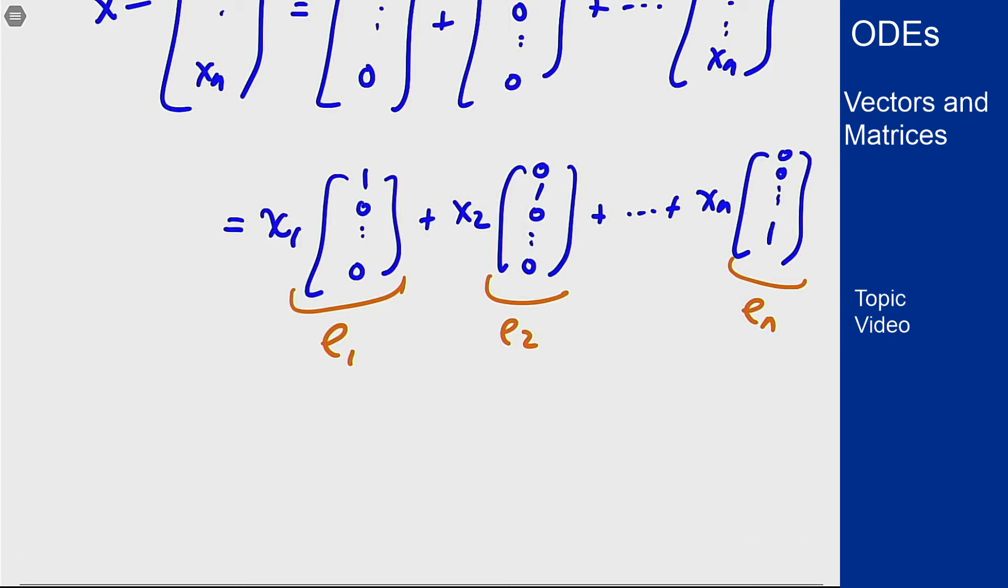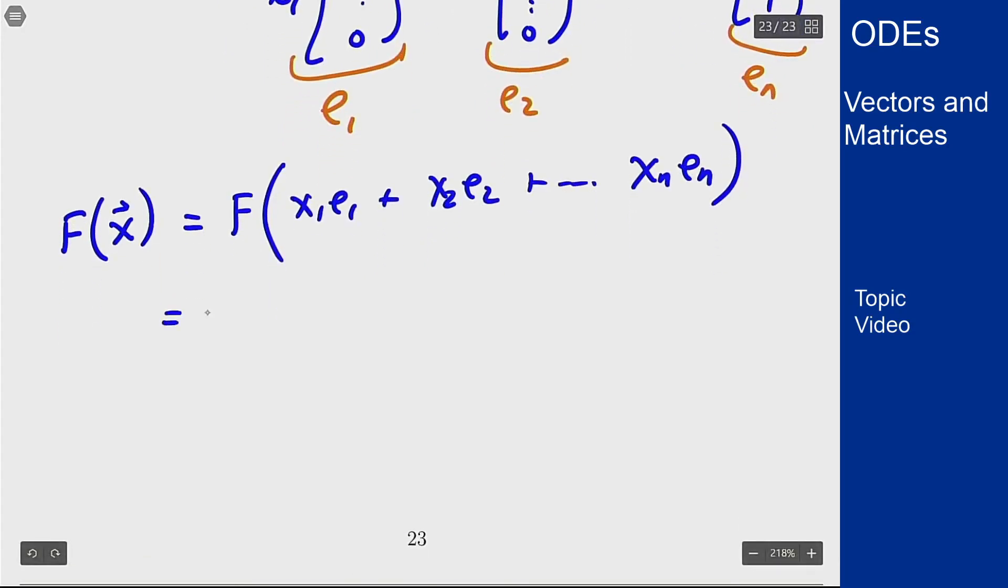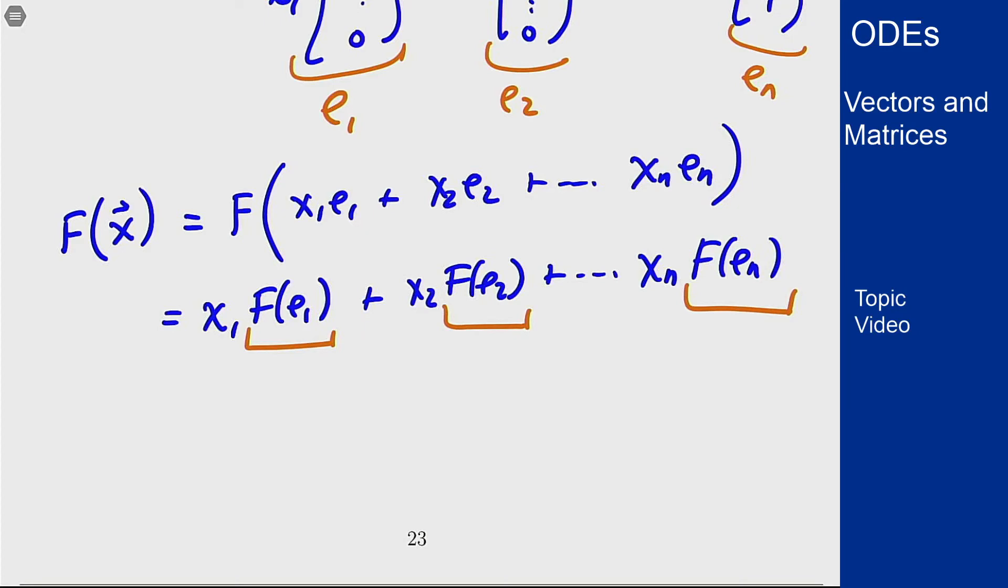Now if I want to look at the map f applied to this vector, this is f of x1·e1 + x2·e2 + ... + xn·en. But I know my linear map respects sums and constant multiplication. This is the same thing as x1·f(e1) + x2·f(e2) + ... + xn·f(en). So if I know what the map does to just these n basis vectors, these n really important simple vectors, I know what it does to everything.